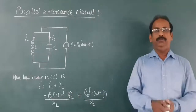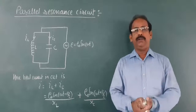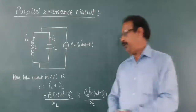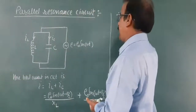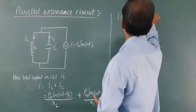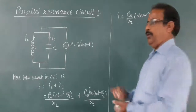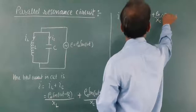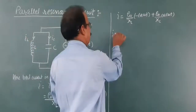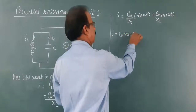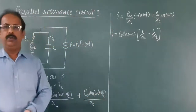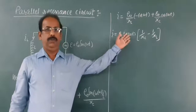Now, sin(ωt − π/2) equals −cos(ωt), and sin(ωt + π/2) equals +cos(ωt). Therefore, the total current I equals E₀/XL times (−cos ωt) plus E₀/XC times (cos ωt). Taking E₀ cos(ωt) as a common factor, in the bracket you get (1/XC − 1/XL). This is the equation for the current in this circuit.